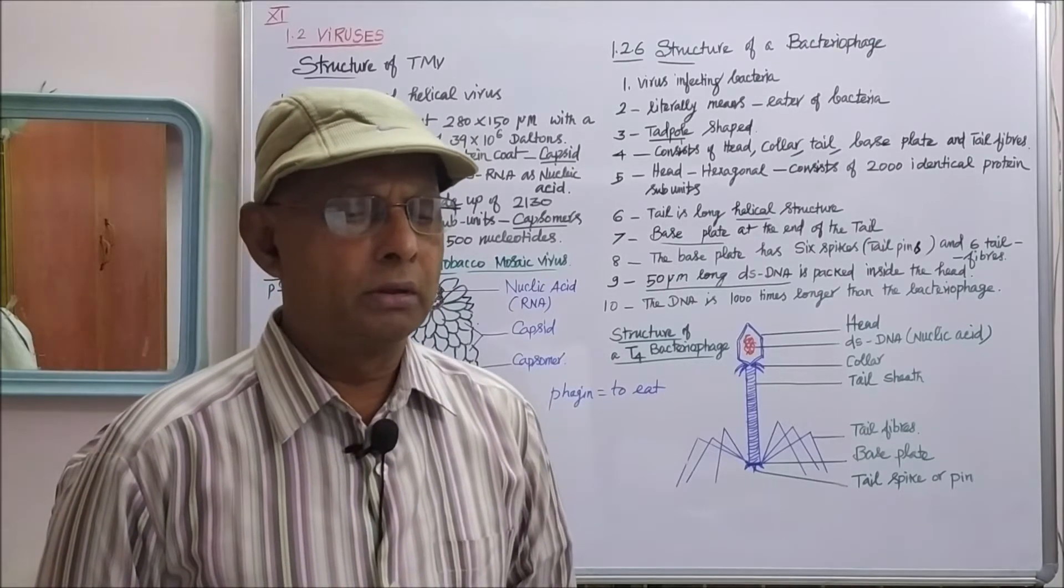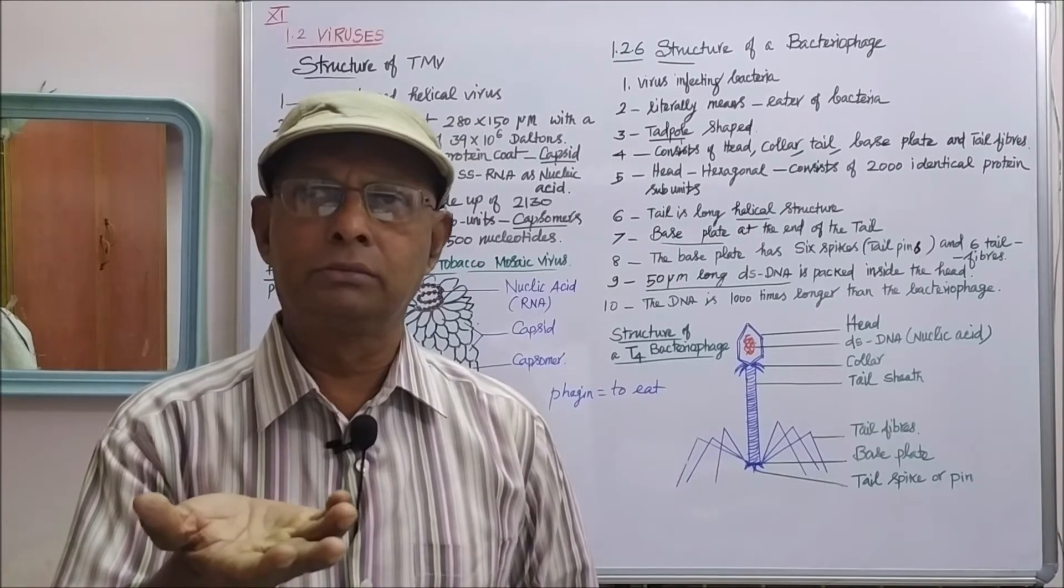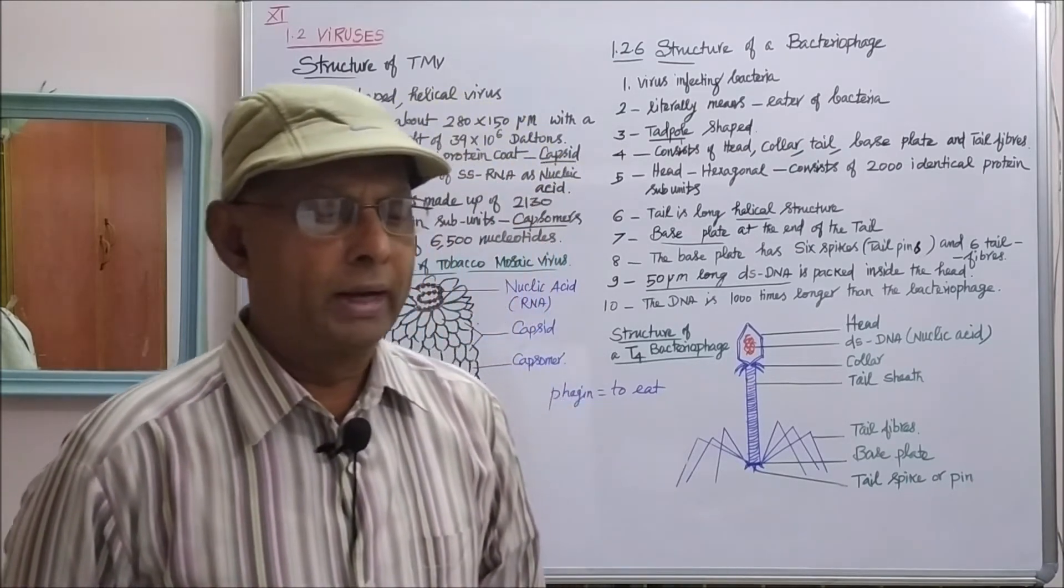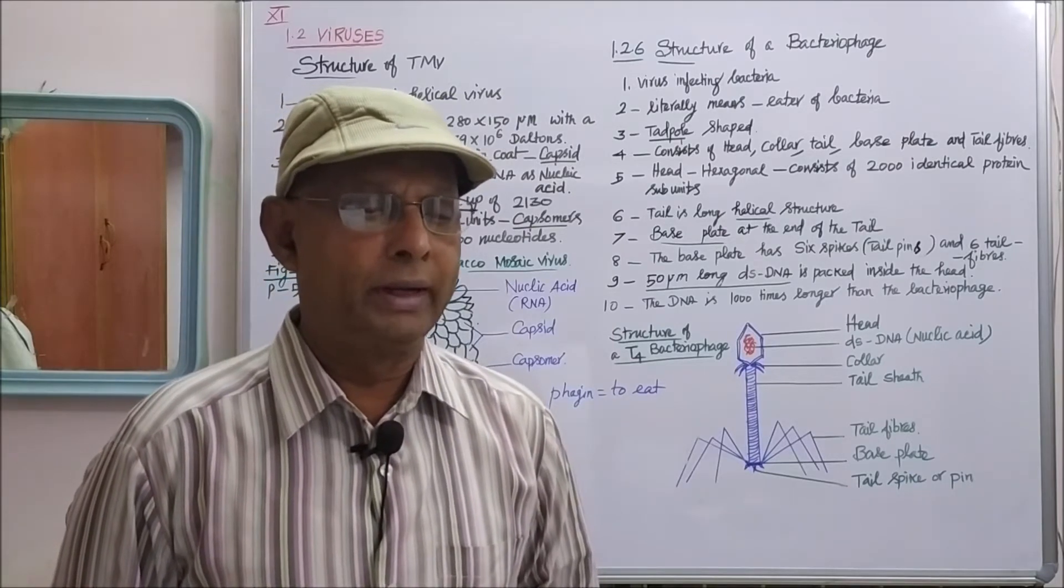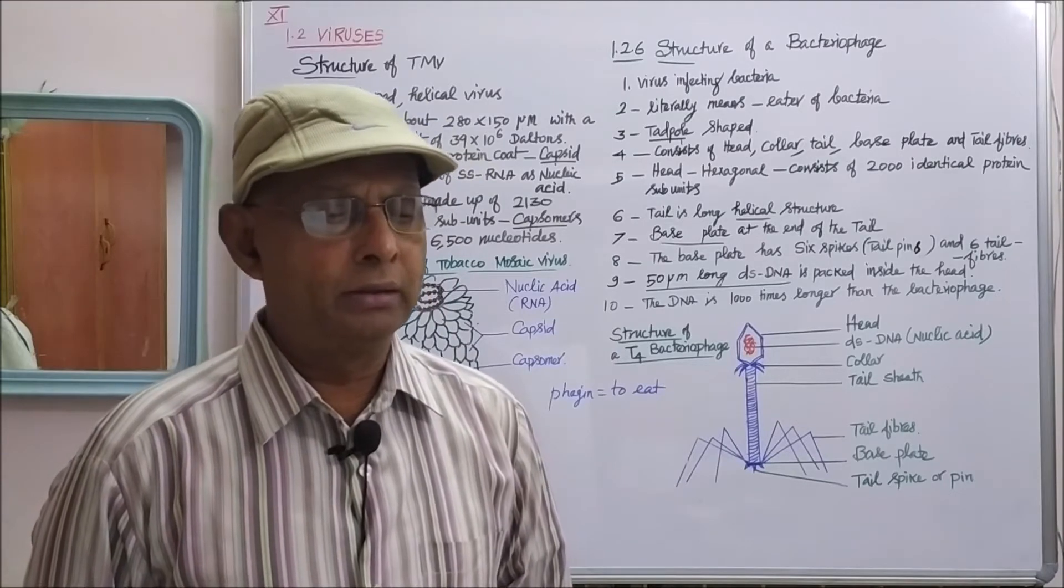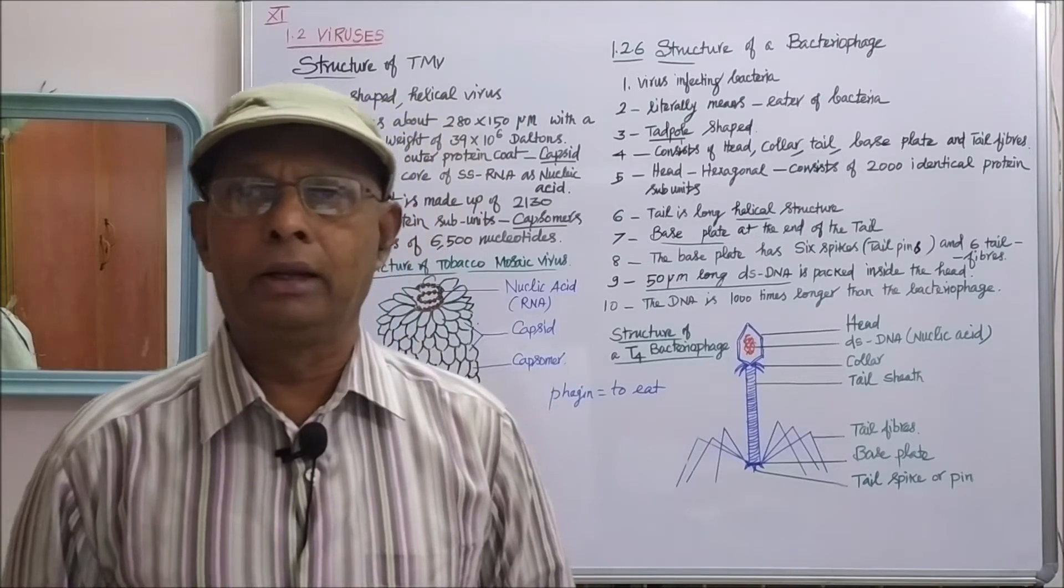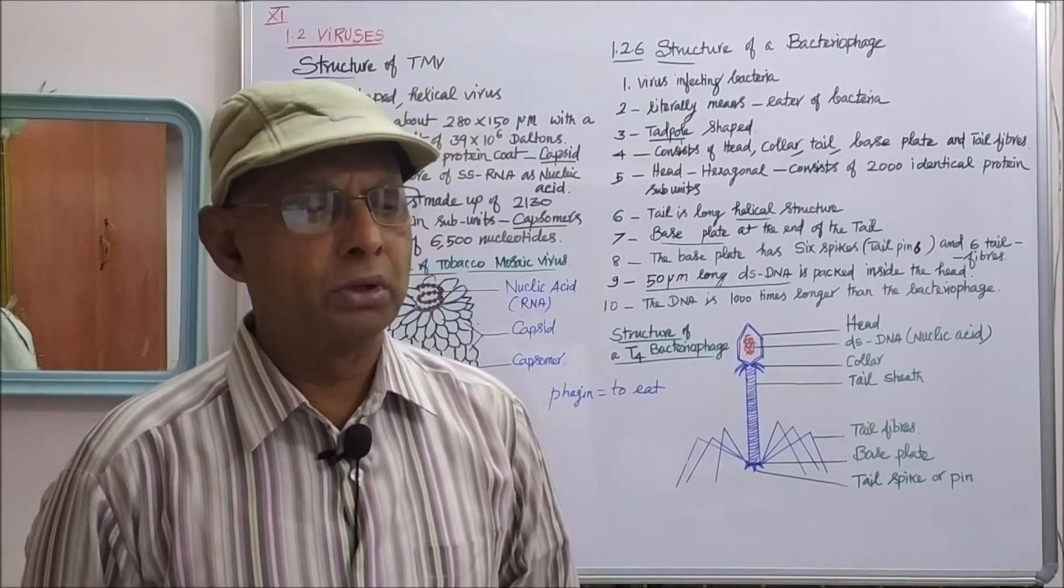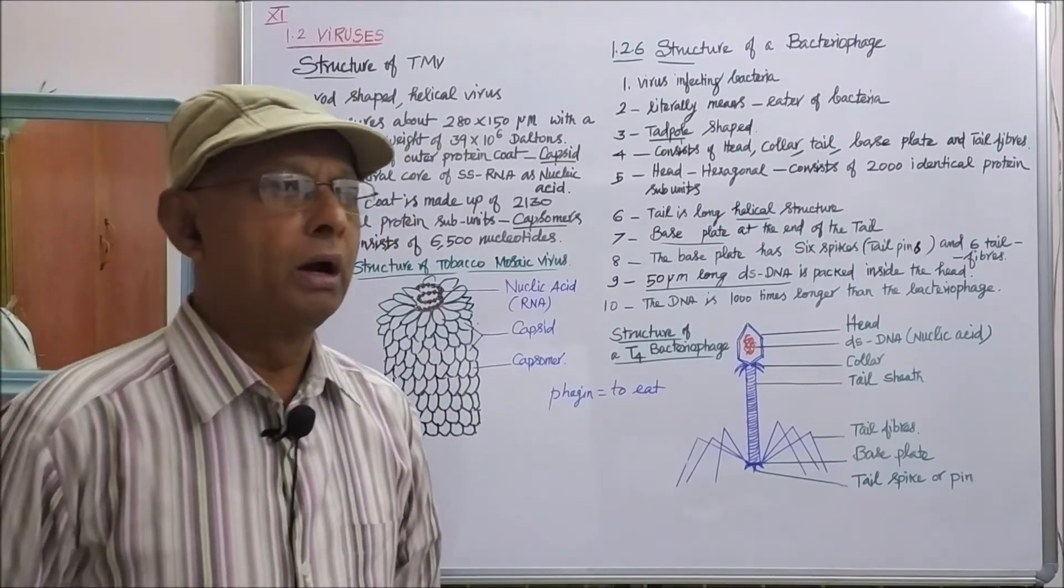Then, downward curling of the leaves. Leaves will bend downward. Downward curling of the leaves and distortion of the young apical leaves occur. Finally, the plant becomes shortened and the yield is greatly reduced. These are all the symptoms of tobacco mosaic disease.